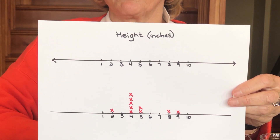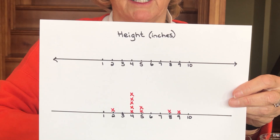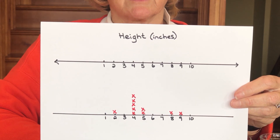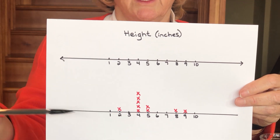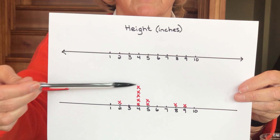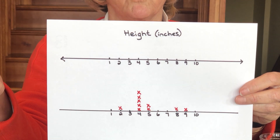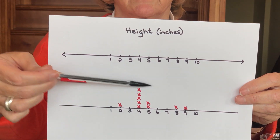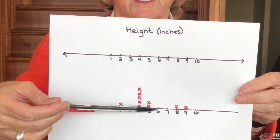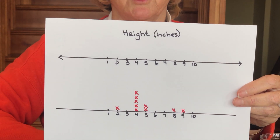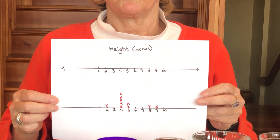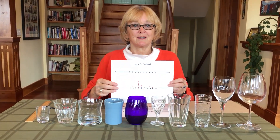How would I ask students to interpret this? Once we've measured and displayed it, we also want them to use some vocabulary to describe it. I might listen for them identifying the shortest and the tallest. Maybe they'd say there are a lot of glasses at the same height — in fact, seven glasses were four or five inches tall. We call that a cluster of data. Then there's a gap: no glasses measured between five and eight inches tall. So that's a line plot for the attribute of height for these ten glasses.